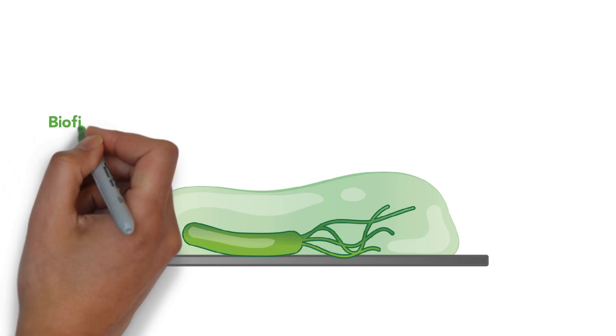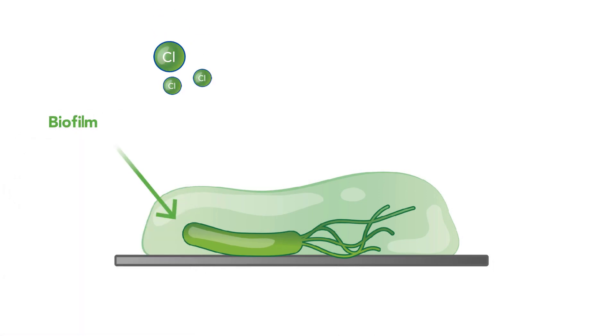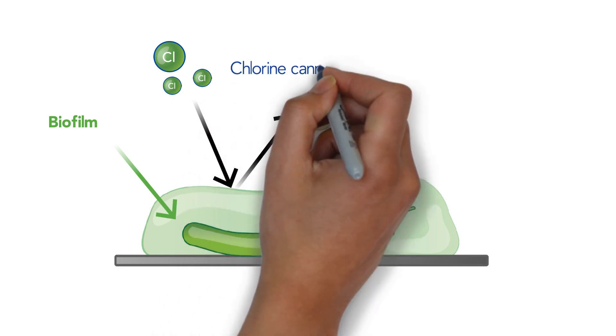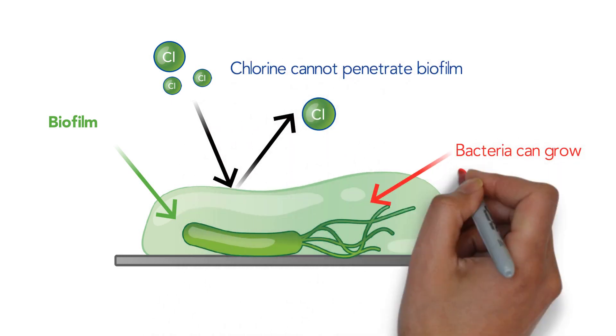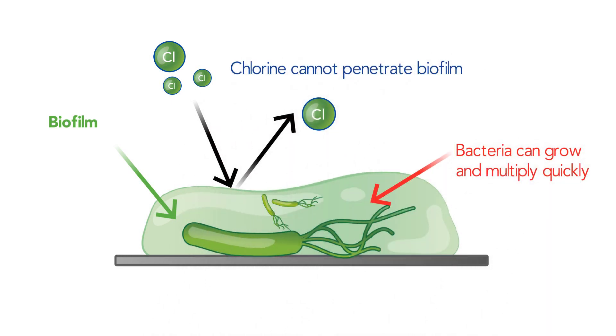The main problem with sand, crushed glass, and other filtration media is biofilm, a slimy, acidic substance formed by bacteria in your filter that protects them from oxidants, inside which bacteria can grow and multiply quickly.